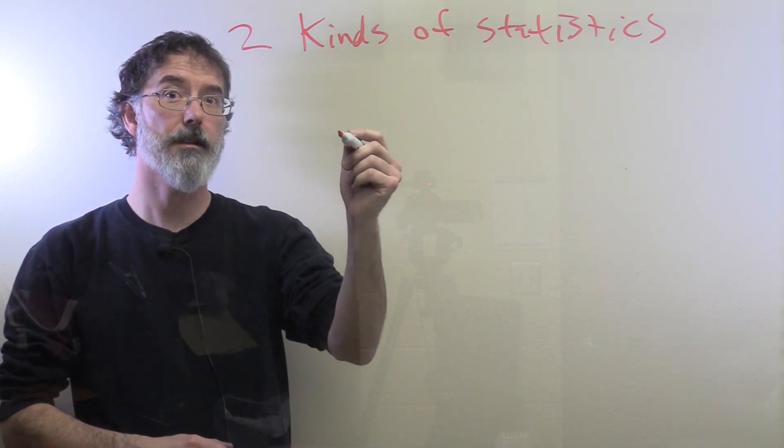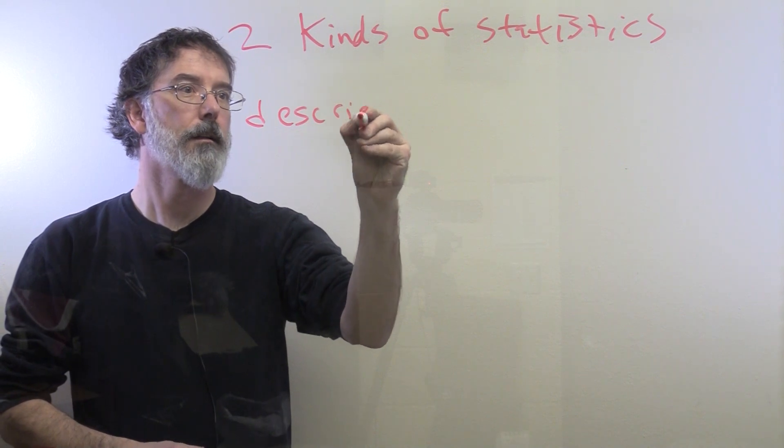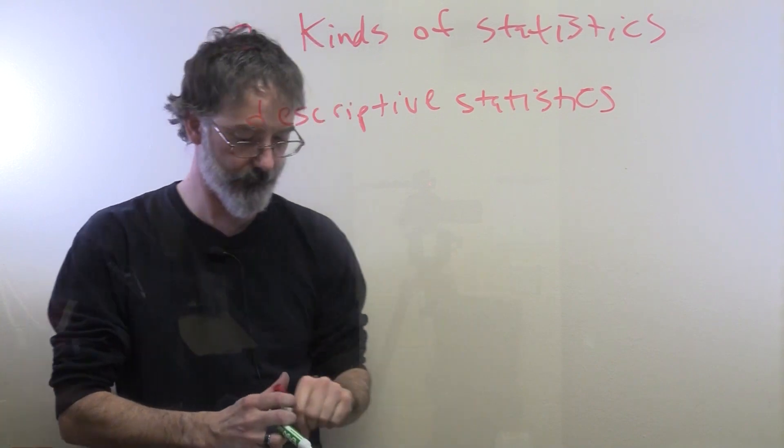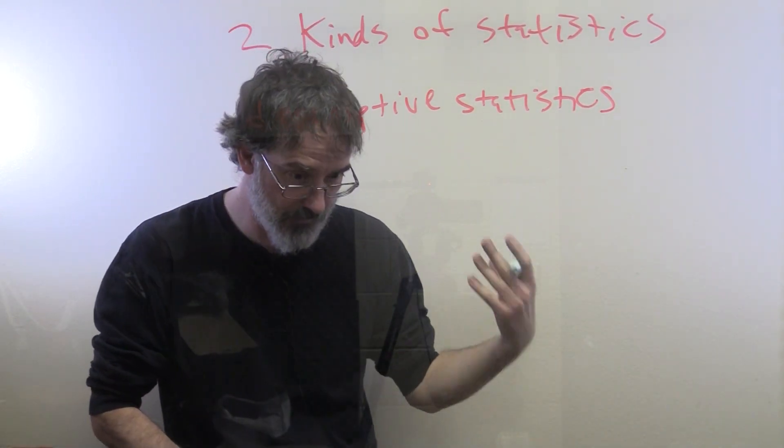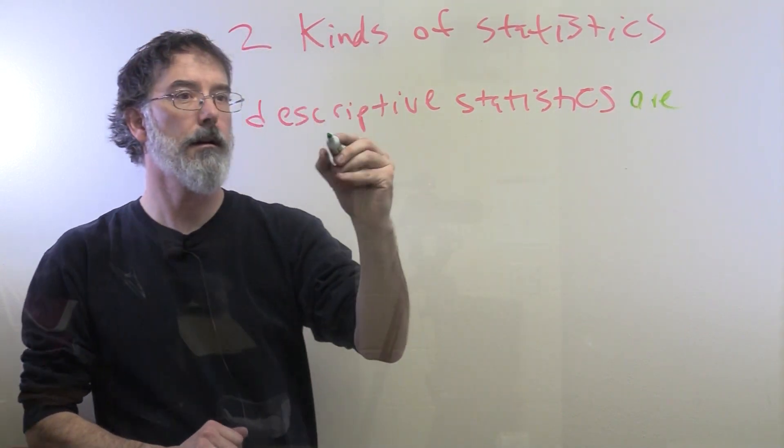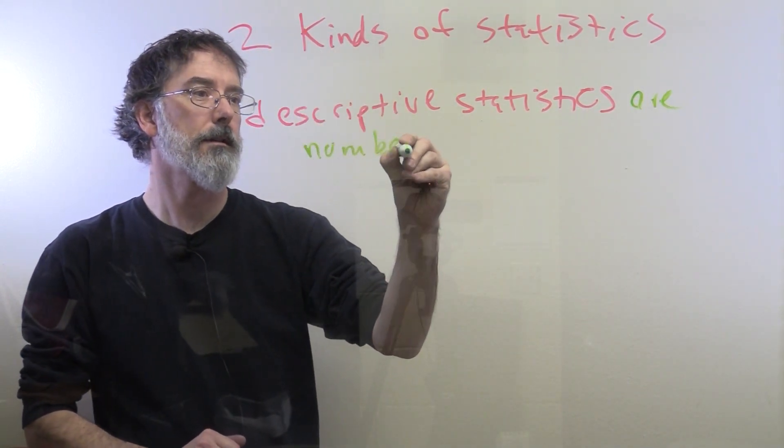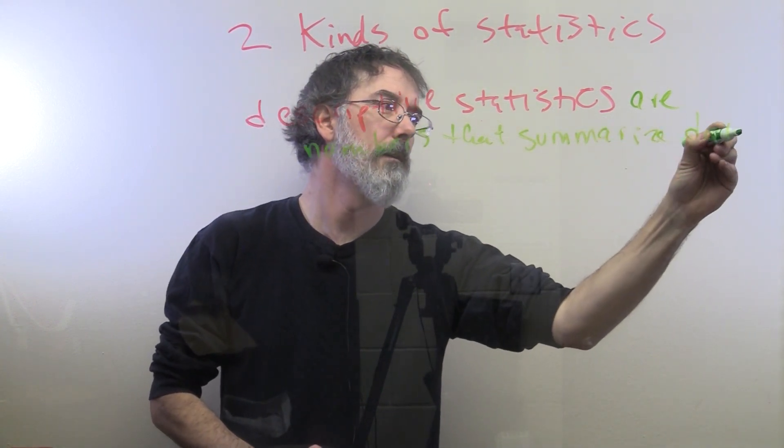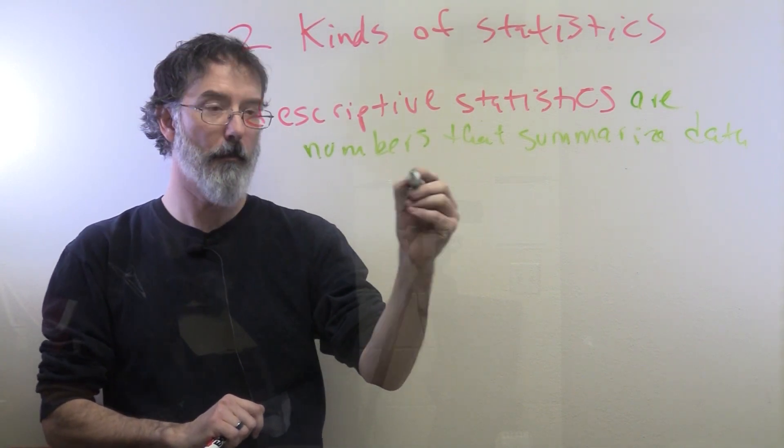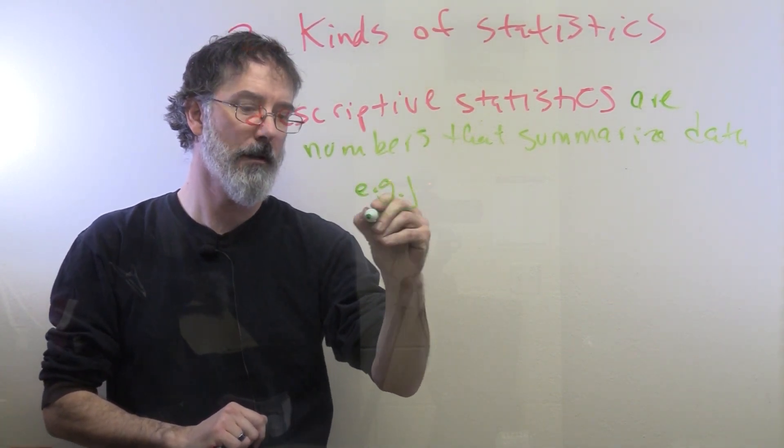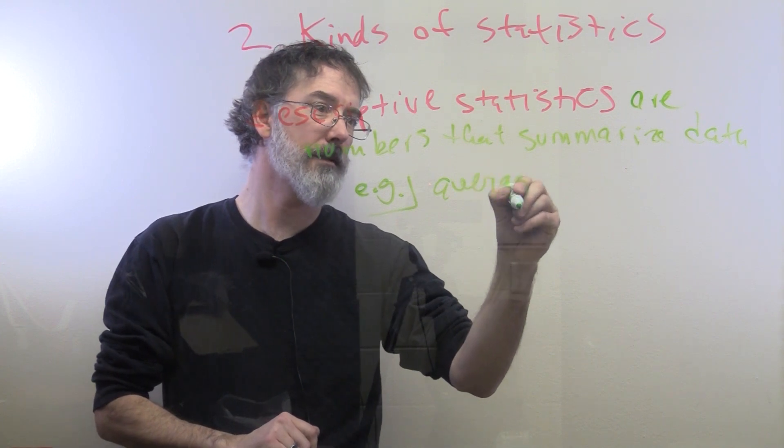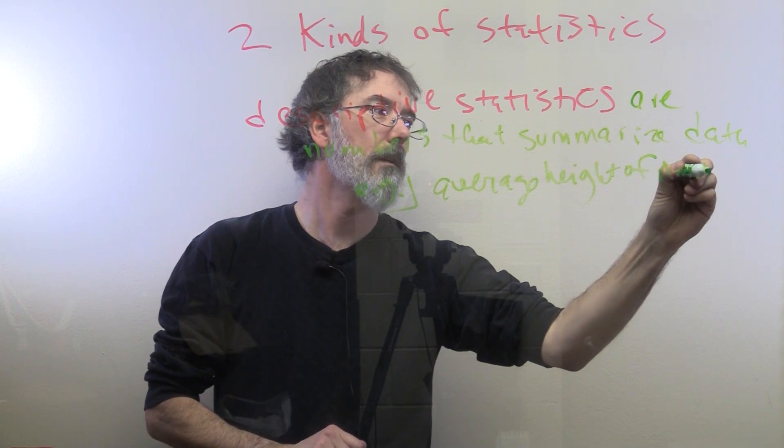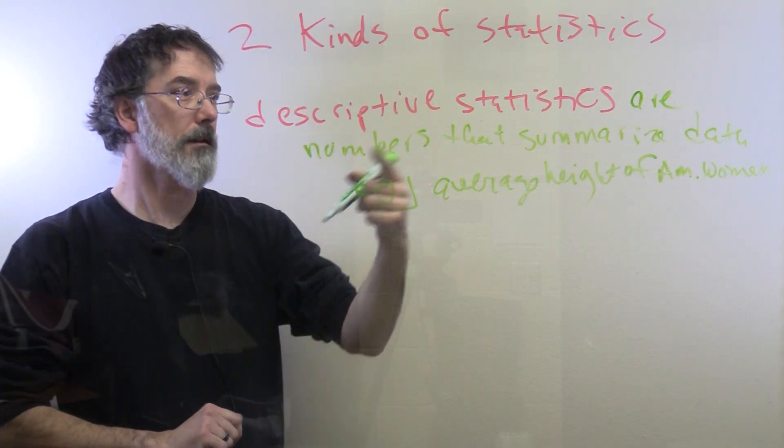The first kind of statistics I want to talk about are descriptive statistics. These descriptive statistics are numbers that summarize data. For example, the average height of American women is a descriptive statistic,